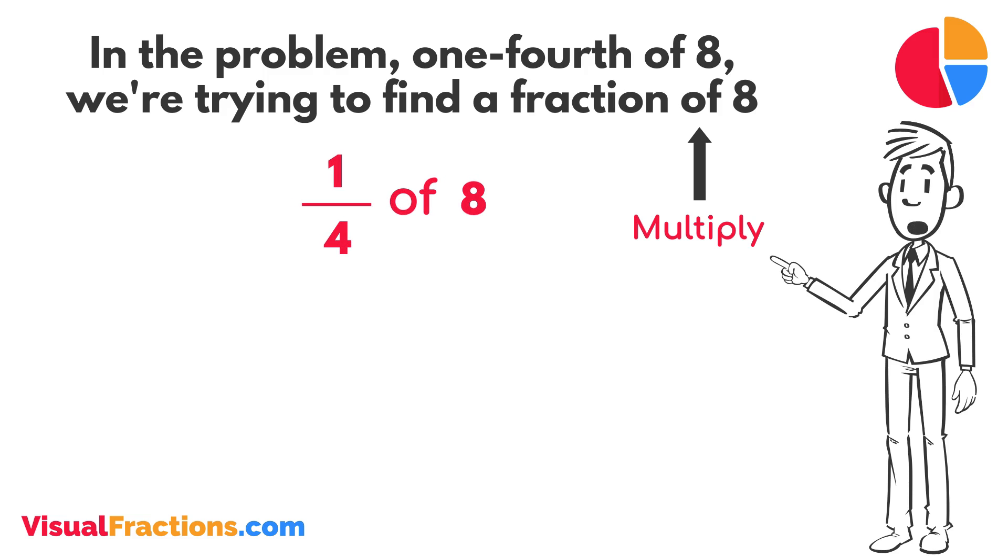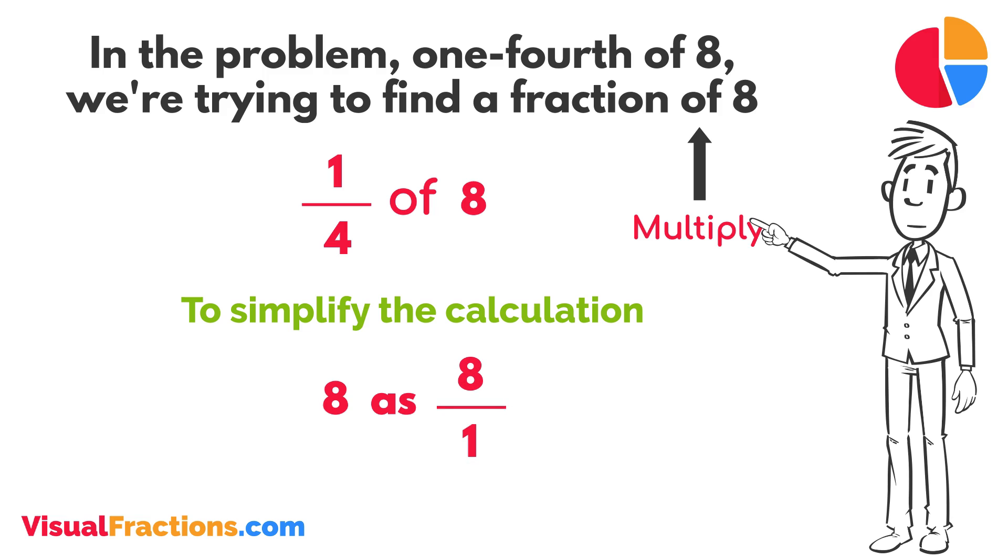To simplify the calculation, we first convert our whole number into fraction form, writing 8 as 8 over 1. This transformation makes it easier to work with our numbers as fractions.